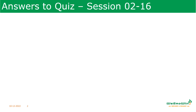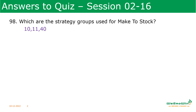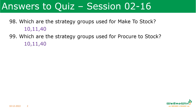Before going to the session, let us see the answers for the previous session. Which are the strategy groups used for make to stock? 10, 11, and 40. Which are the strategy groups used for procure to stock? Here also the same: 10, 11 and 40. Whether it is make to stock or procure to stock, it is for stocking purpose where we do forecasting. Make to stock means you are producing inside; procure to stock means you are buying from outside.